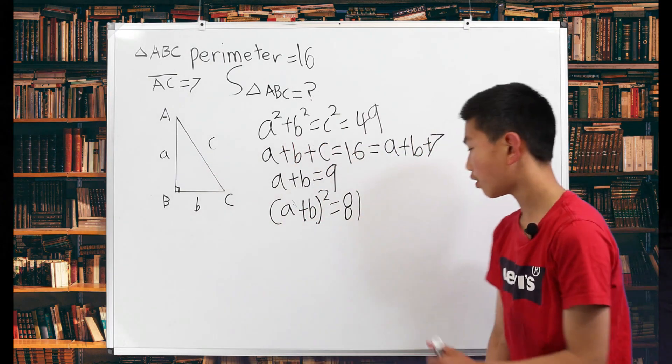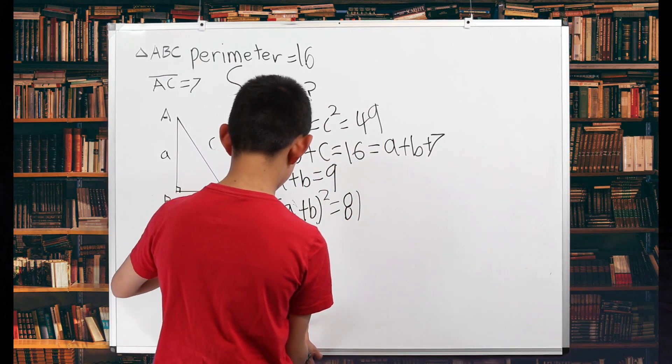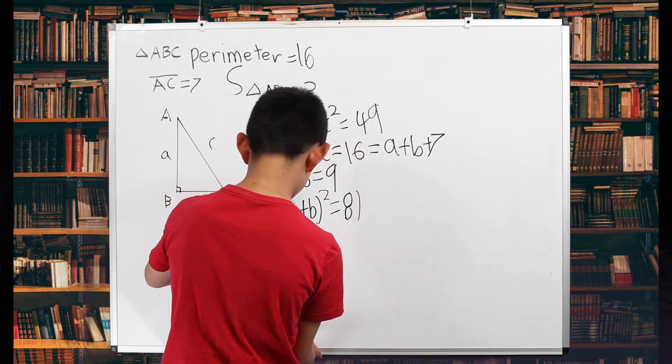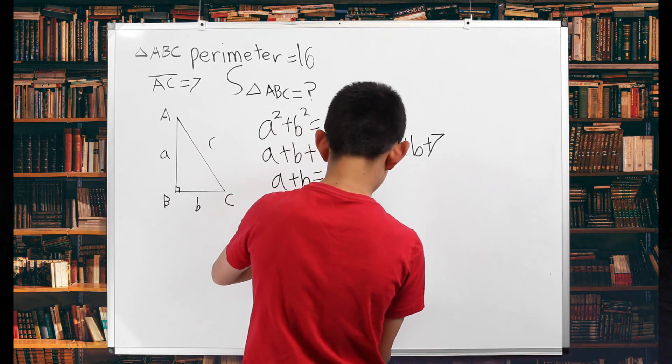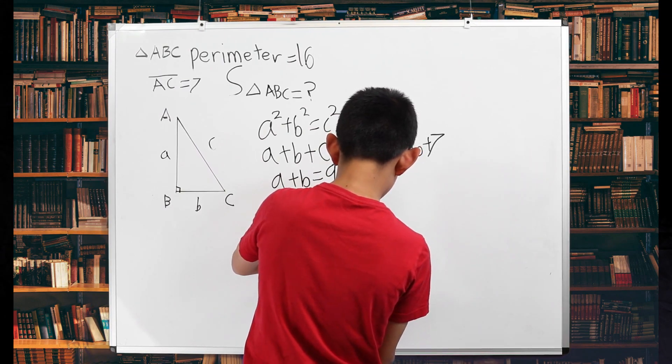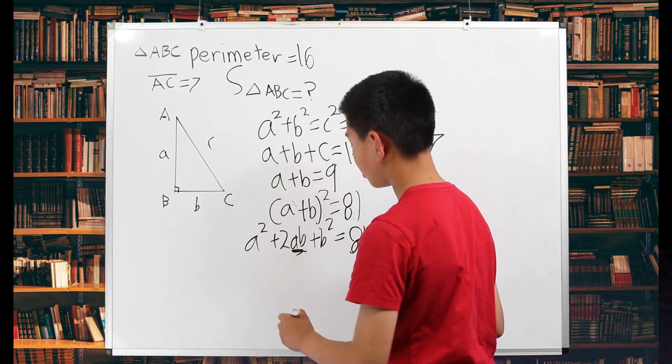Now we can spread out this formula. So when you spread this out, it's going to be A squared plus 2AB plus B squared is 81. And what we first notice is that we found AB in this equation.